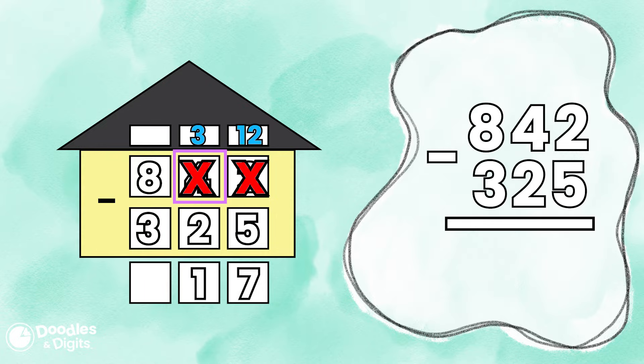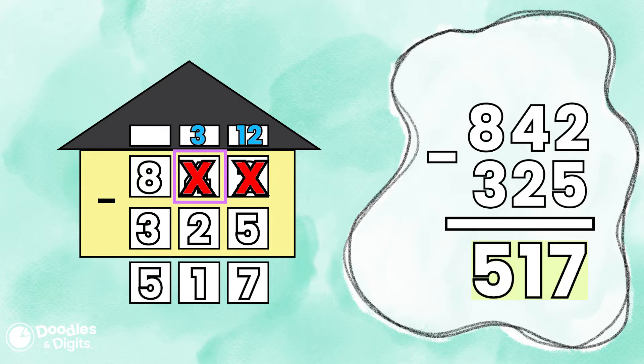Then we'll go to the tens place. Three minus two equals one. And finally, eight minus three is five. So our answer is 517.